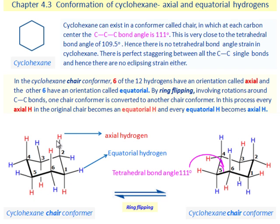6 of the 12 hydrogens have an orientation called axial and the other 6 have an orientation called equatorial. By ring flipping,